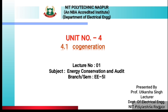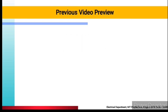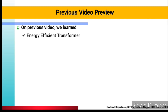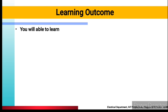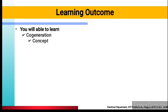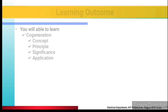It's our new chapter, Unit Number 4, Co-generation. In the previous video, you learned about energy efficient transformers and learning outcomes. You will be able to learn about co-generation — its concept, principle, significance and application.